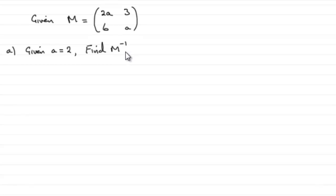So that means that if we substitute A equals 2 into here, we therefore have the matrix M equals 2 times 2, that's 4, and then we've got 3, 6, and 2.